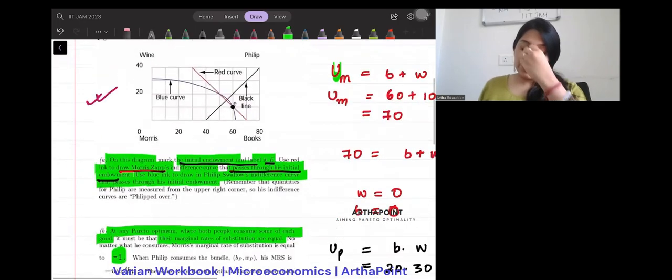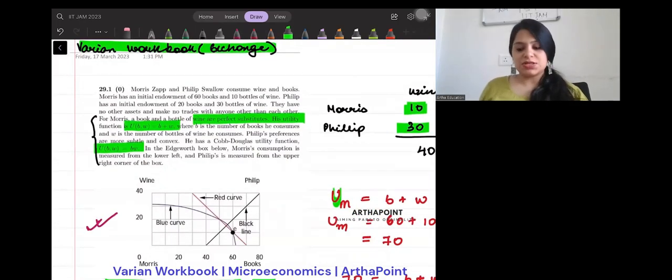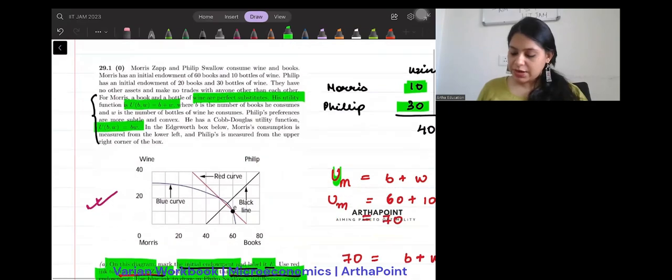So if you remember, his utility function was B plus W, right? And because it was B plus W, you will get the MRS as 1. So if I just go ahead and put this negative sign along with it, I will get it as minus 1.